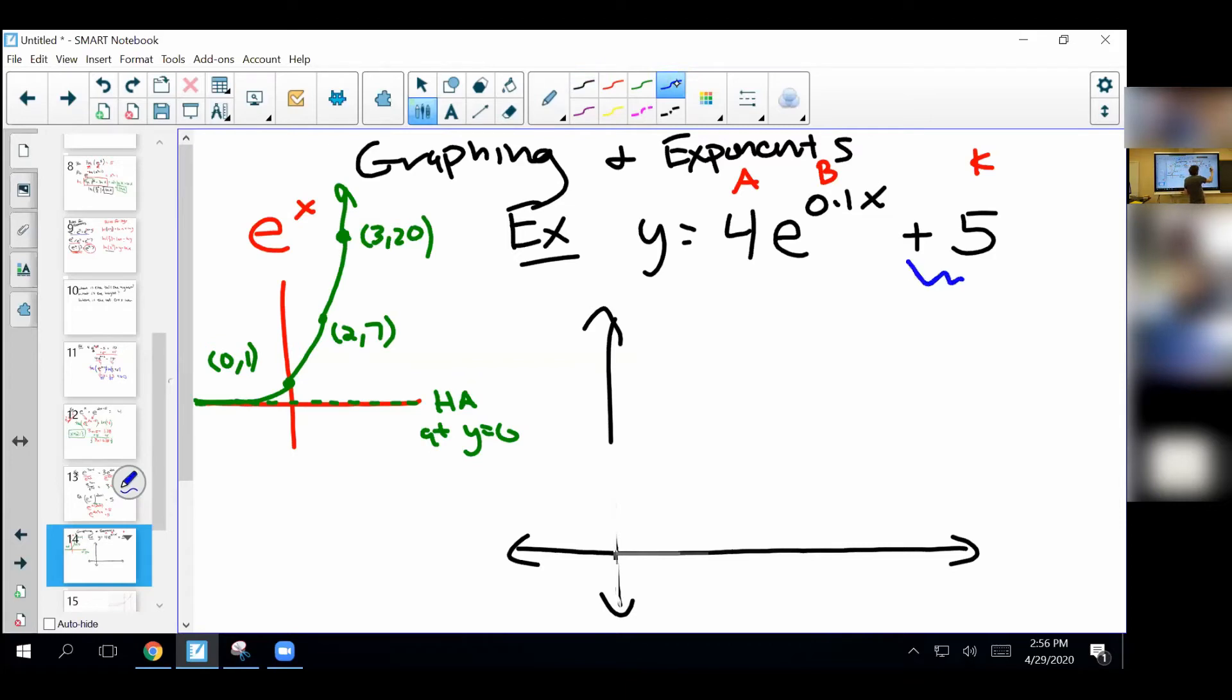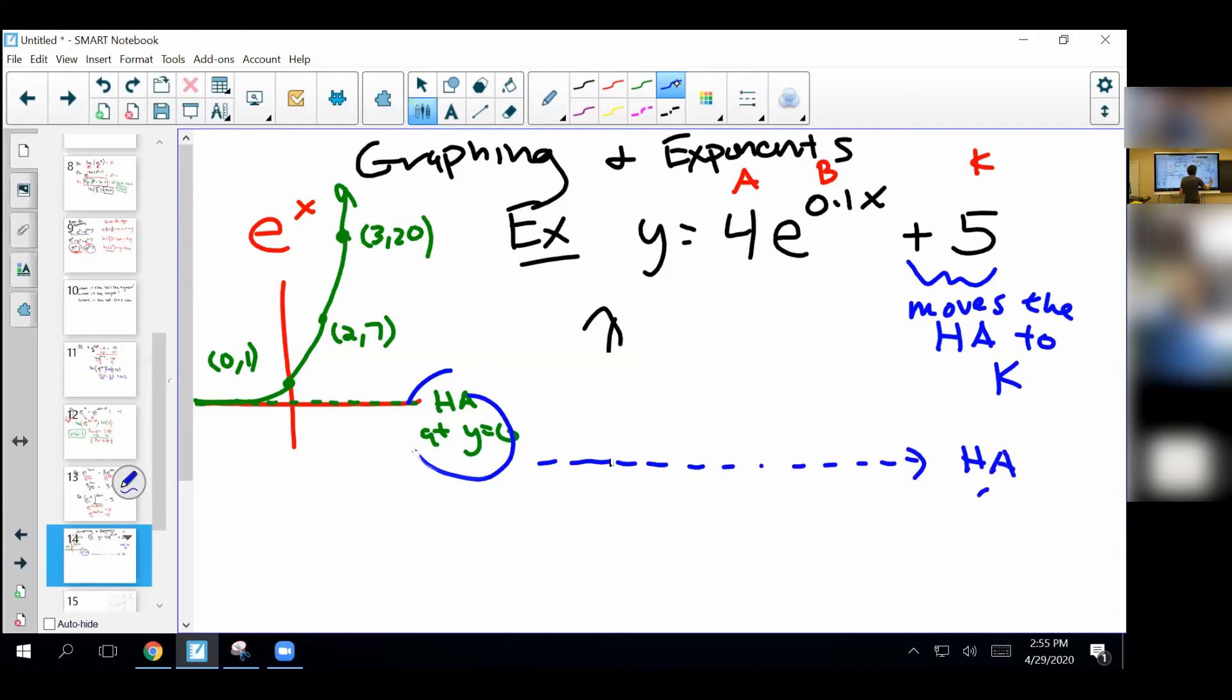So we're going to start with k. And you can think of this, well, it moves up the whole graph. But in particular, this moves up the horizontal asymptote to whatever value it is, basically, to the k value. So right off the bat, I can draw on my horizontal asymptote. So we've started at zero, but it moves up five. So that's where it's going to be. Put it in y equals HA. Great.